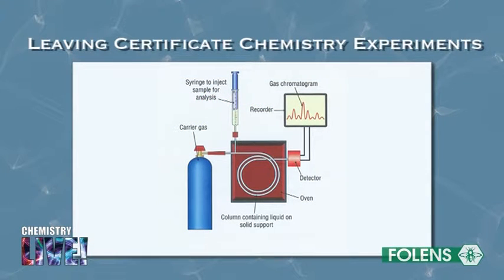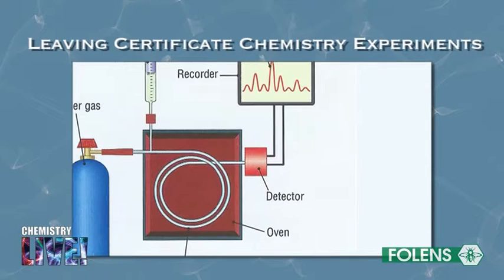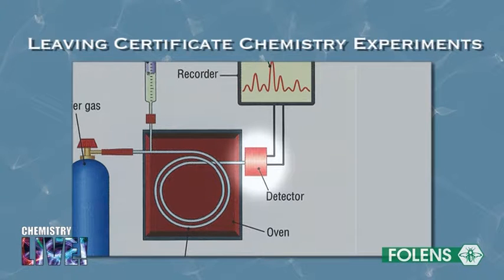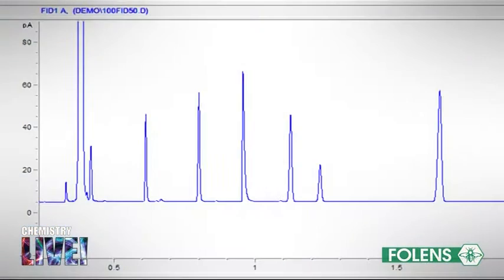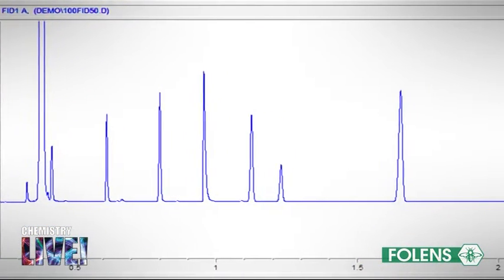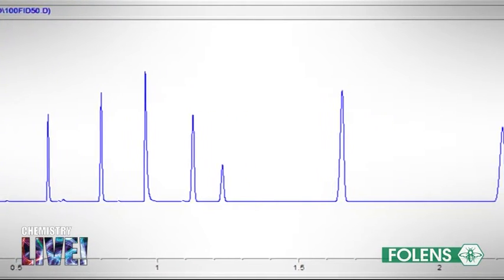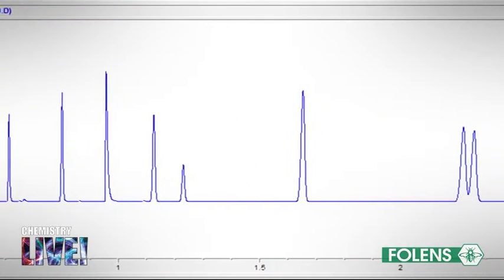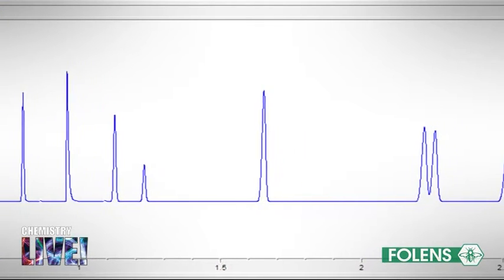As each component of the mixture leaves the column, it passes into a detector that converts the chemical signal into an electrical signal. The electrical signal is recorded and plotted as a chart called a gas chromatogram on which each component of the mixture shows up as a peak.